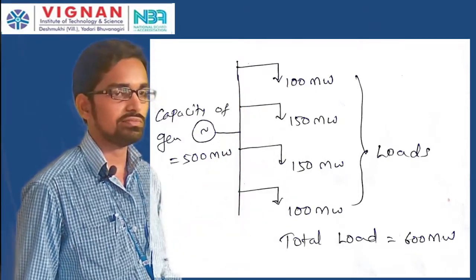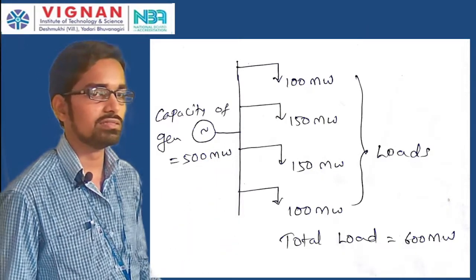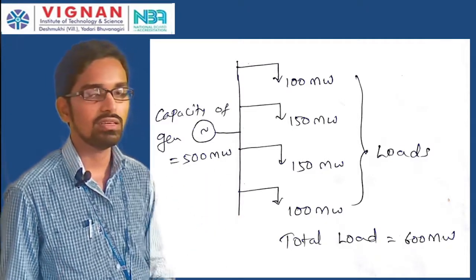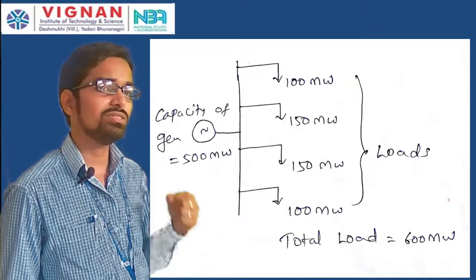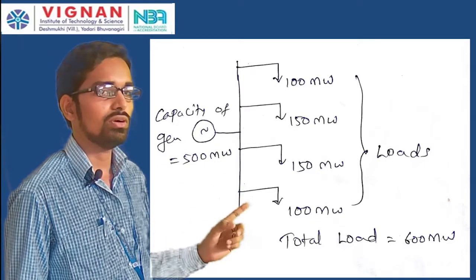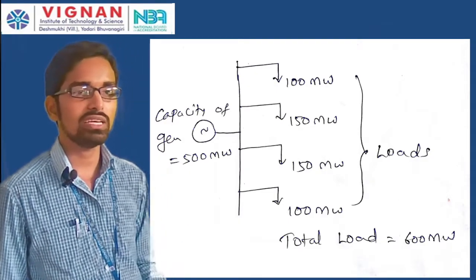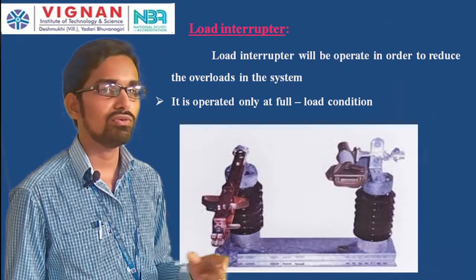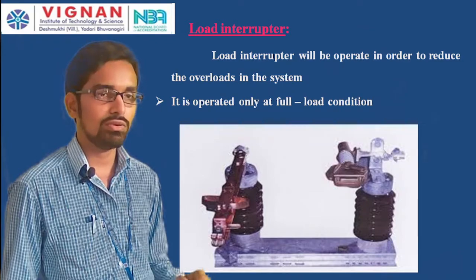By disconnecting the lowest-priority load using the load interrupter, continuous supply is maintained for the remaining loads. If the overload is not disconnected, voltage fluctuations and frequency instability will occur. Load interrupters are used only at full load conditions.